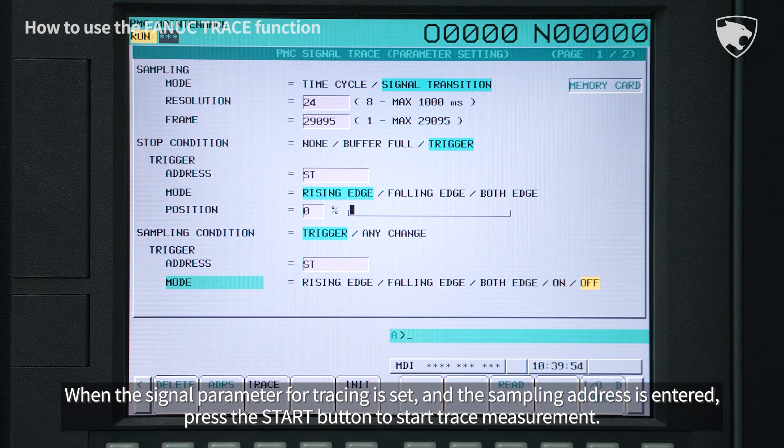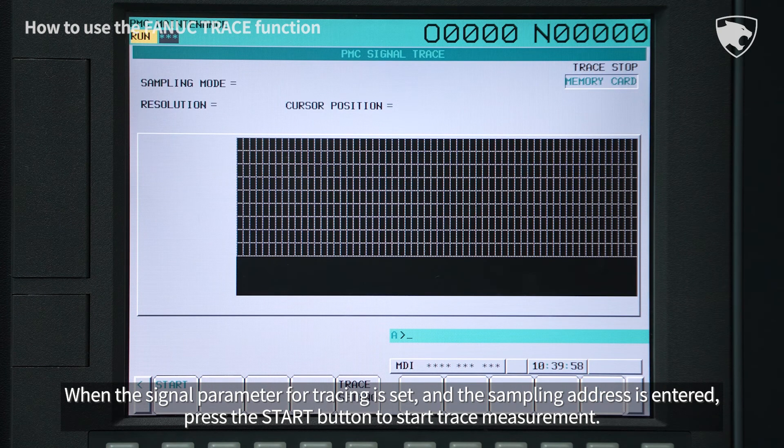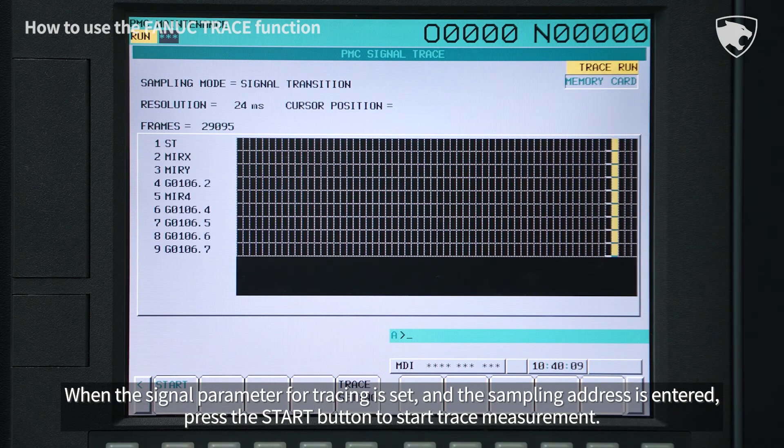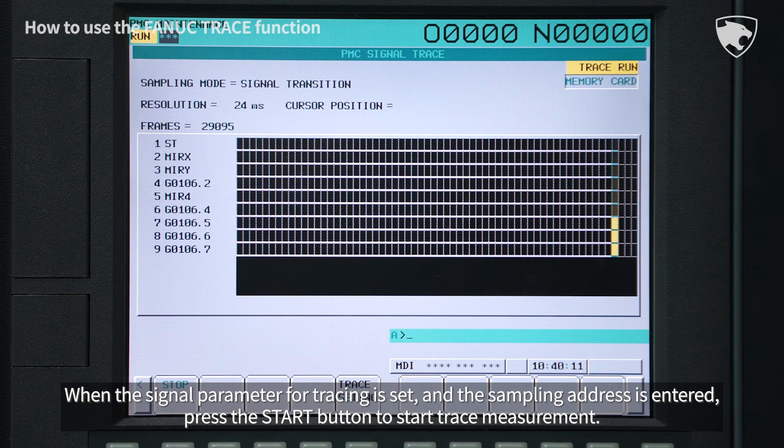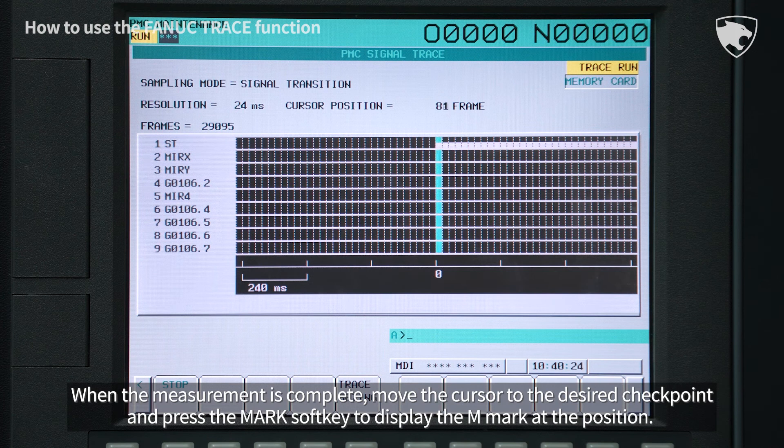When the signal parameter for tracing is set and the sampling address is entered, press the start button to start trace measurement. When the measurement is complete, move the cursor to the desired checkpoint and press the mark soft key to display the M mark at the position.